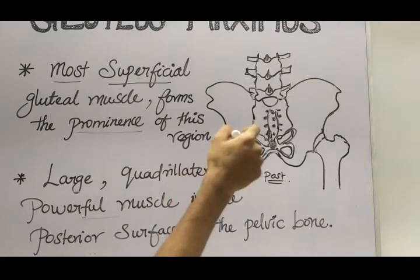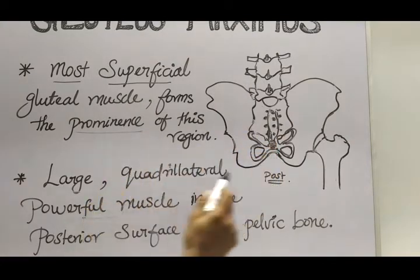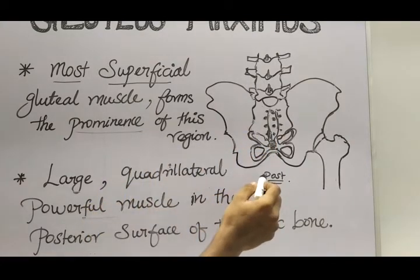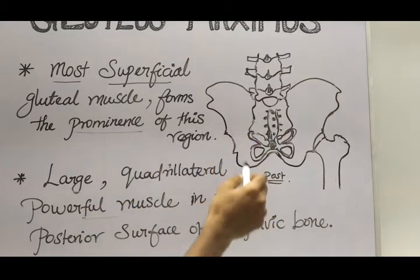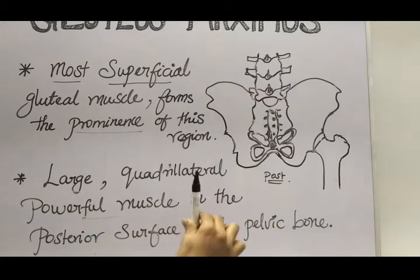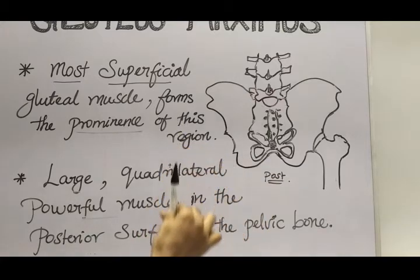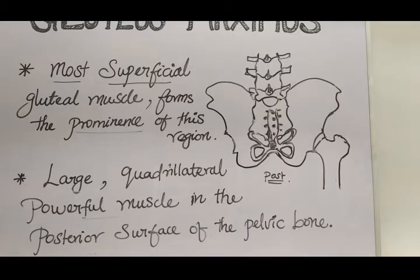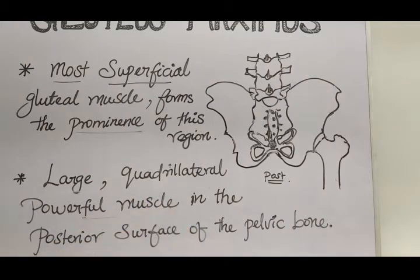Due to the support and function of this muscle, we are able to stand in the erect posture and maintain that erect posture. We'll be seeing about it in detail when we look at the function of this muscle. Now let's move on to the origin and insertion of the gluteus maximus muscle.